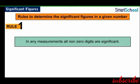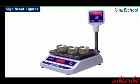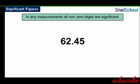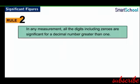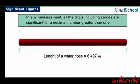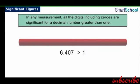There are rules to determine the significant figures in a given number. The first rule says that in any measurement, all non-zero digits are significant. For example, a steel object that measures 62.45 kg has all non-zero digits, so all four digits are significant figures. The second rule says that all digits including zeros are significant for a decimal number greater than 1. For example, the length 6.407 m is greater than 1 and has four significant figures.